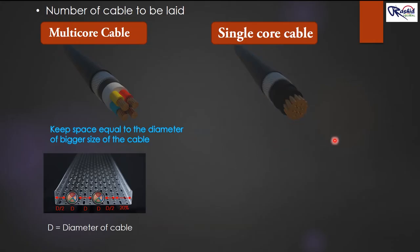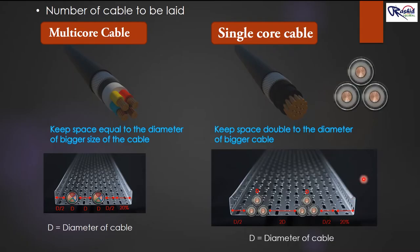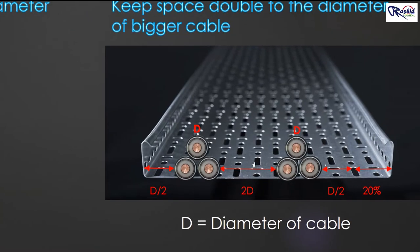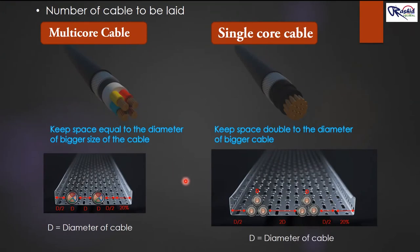For single core cable, we use a trefoil arrangement — trefoil arrangement means three single core cables laid together with different phases: R, Y, and B. If we have to lay two sets of trefoil arrangement in the cable tray, the distance between the two trefoil arrangements is equal to double the diameter of the bigger size cable — that is 2D. The distance between the trefoil and the flange of the cable tray is half the diameter of the cable, that is D/2, on both sides. Then we keep 20 percent extra space for future use.